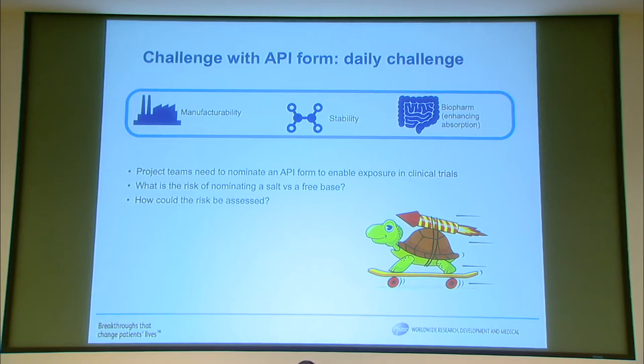Project teams need to nominate an API form — meaning is it crystalline, amorphous, freeform, or a salt or co-crystal? These are all things we think about when we have a hit or target molecule. What's the risk of nominating a salt versus a freeform? It's time issues, cost issues. We need to calculate the risk, and because it's risk, we need assessment tools.